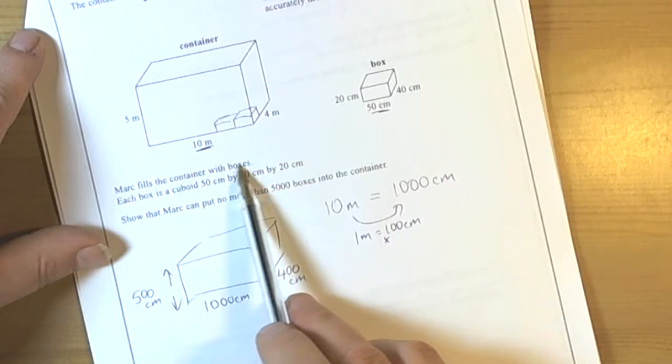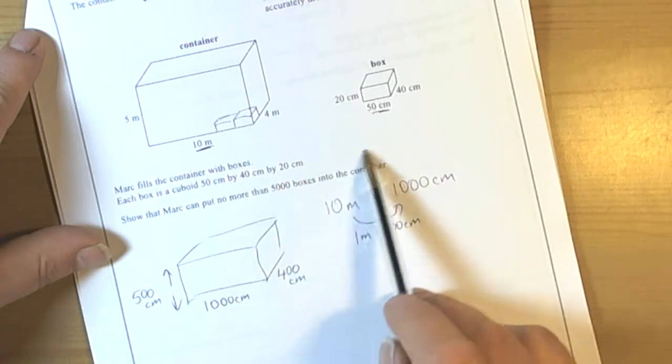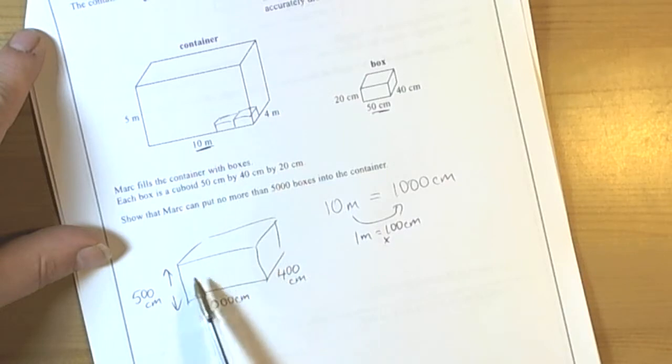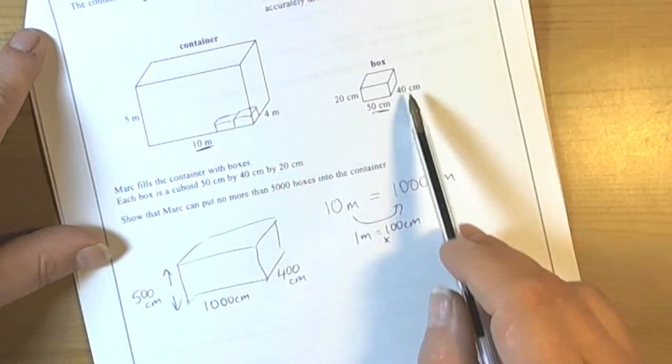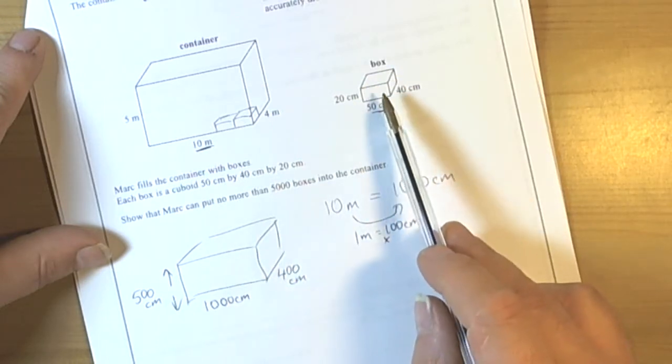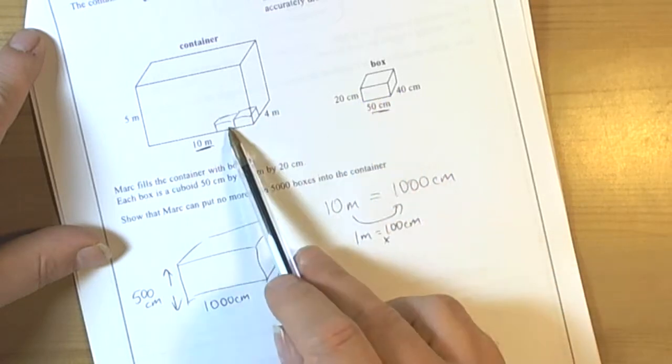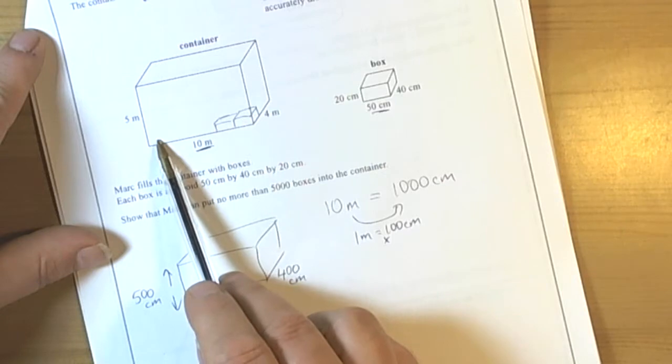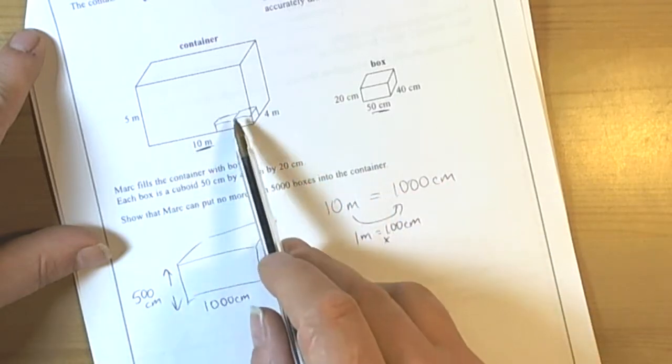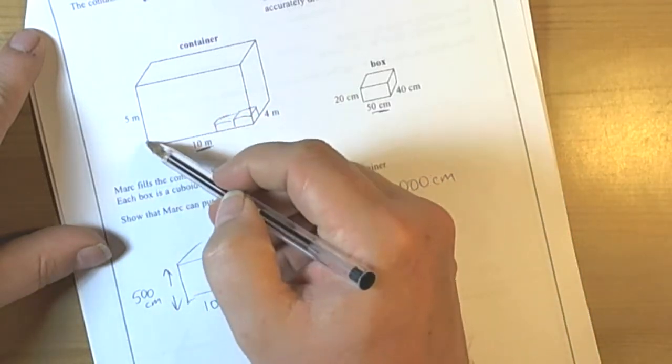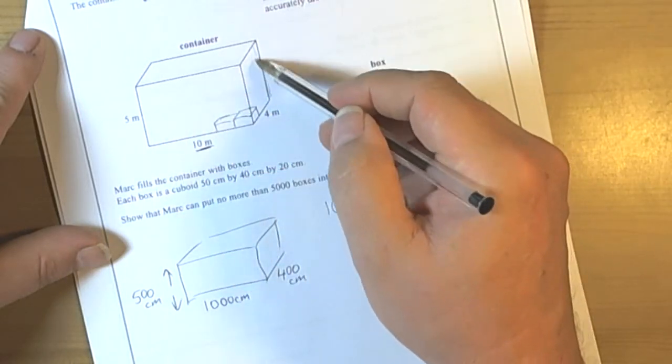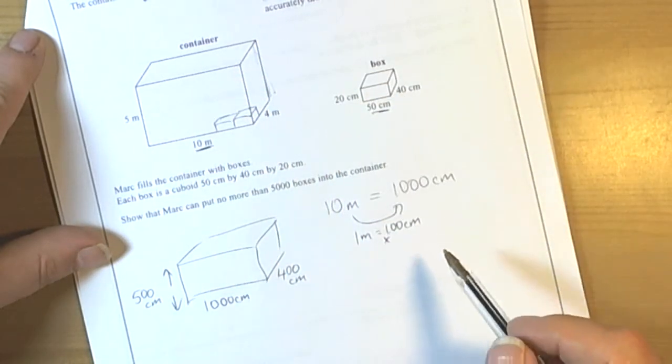They're saying they're going to fill the container with the boxes. Usually the quickest way of doing this kind of problem is rather than work out the actual volume and share them, it's usually quicker to just look at how many boxes you can fit along the bottom and then look at the bottom layer and multiply up by how many layers you can get.